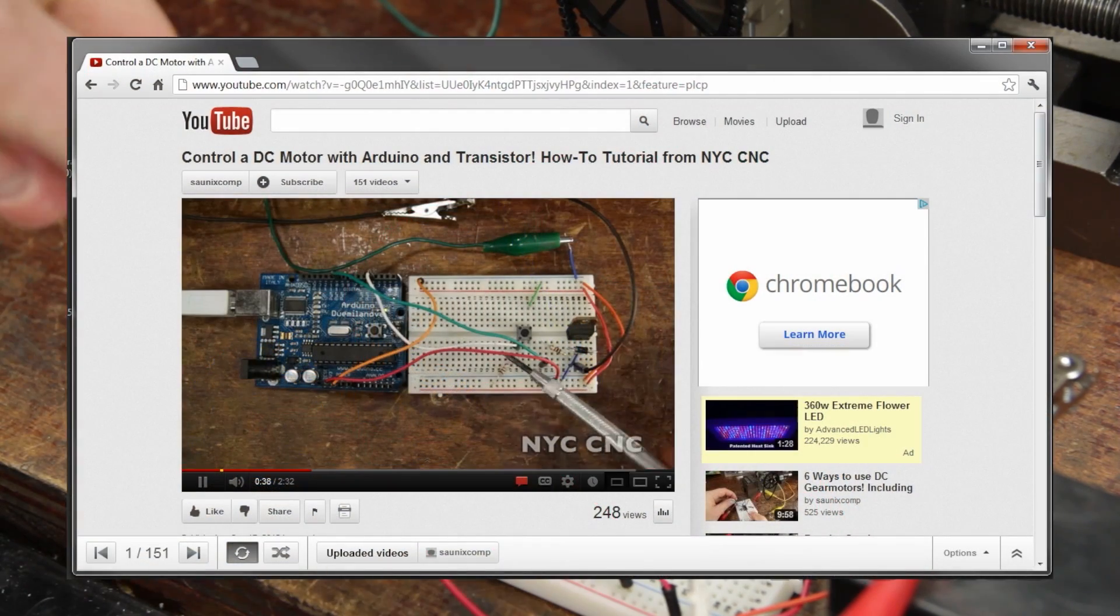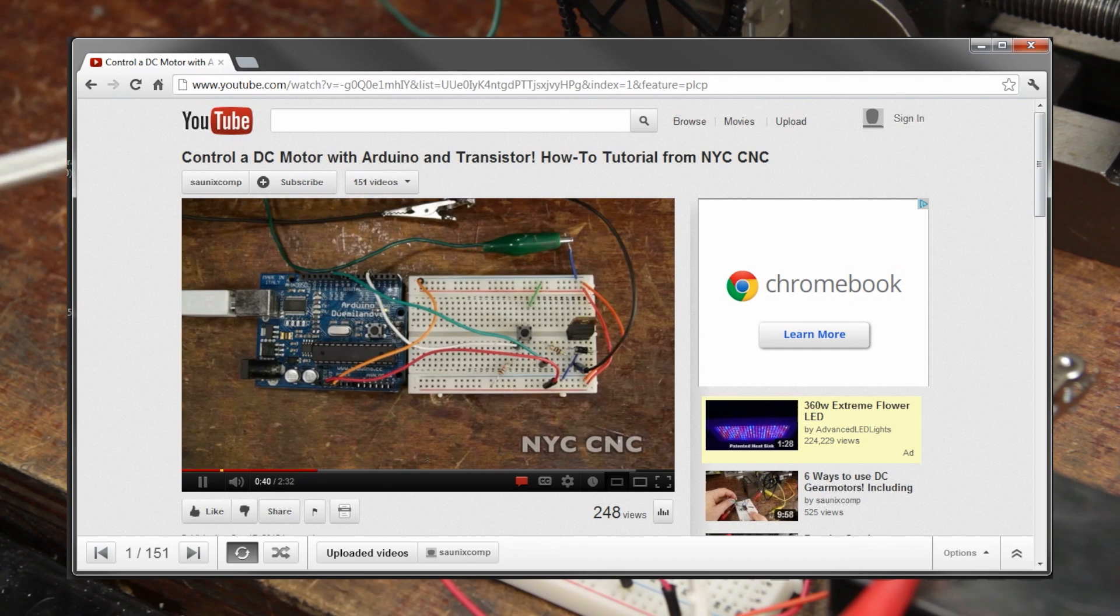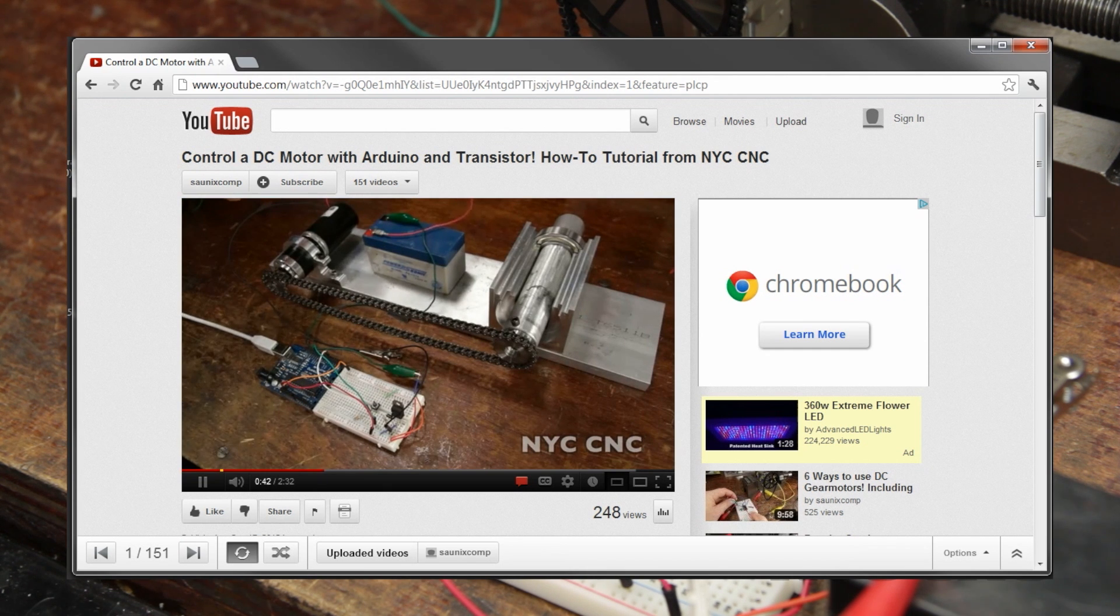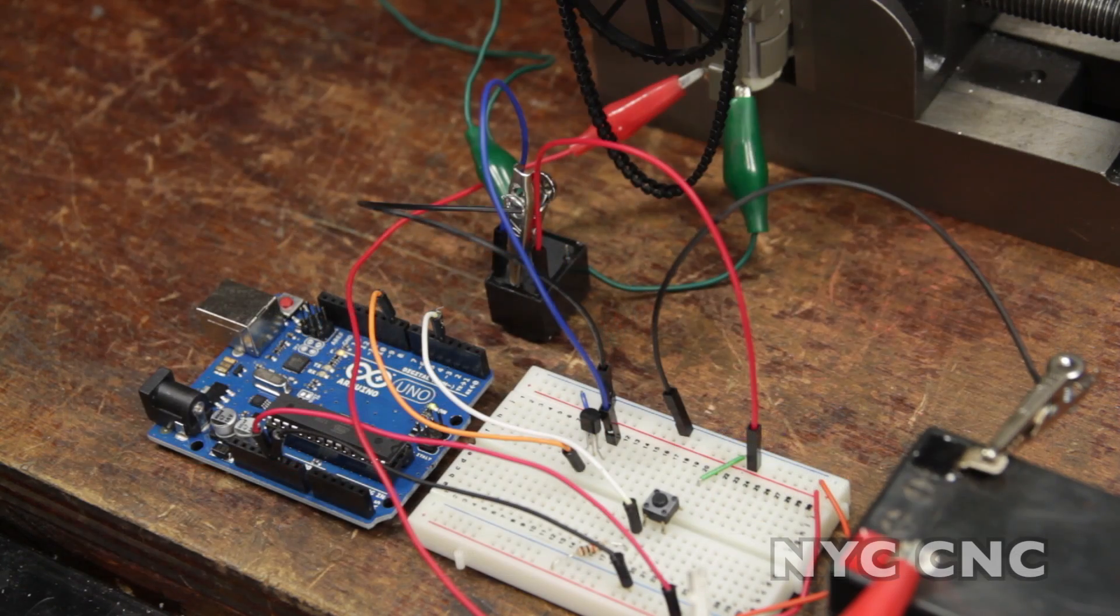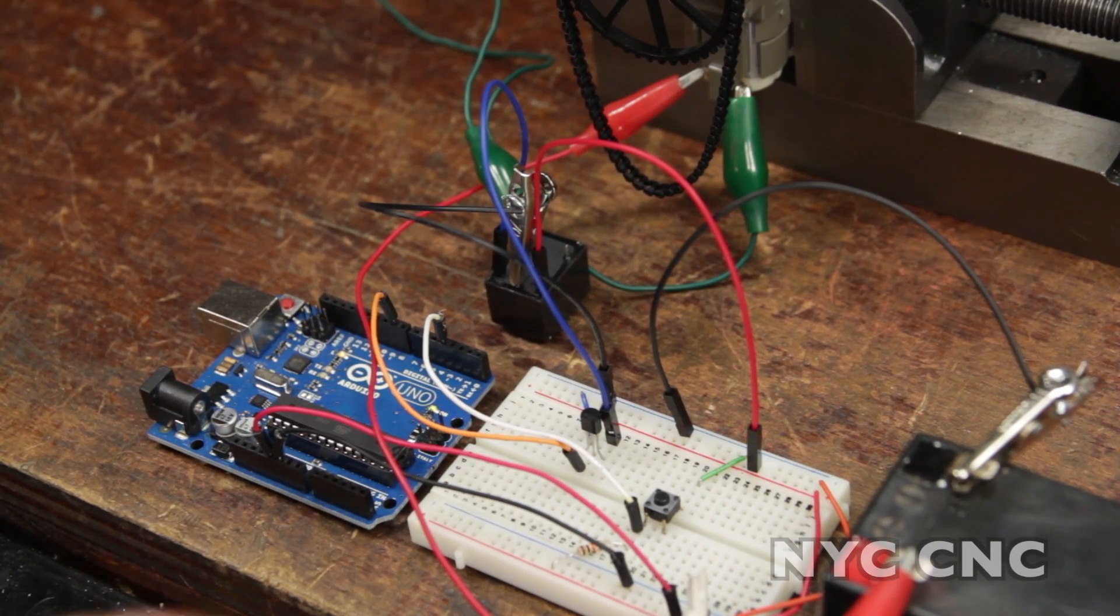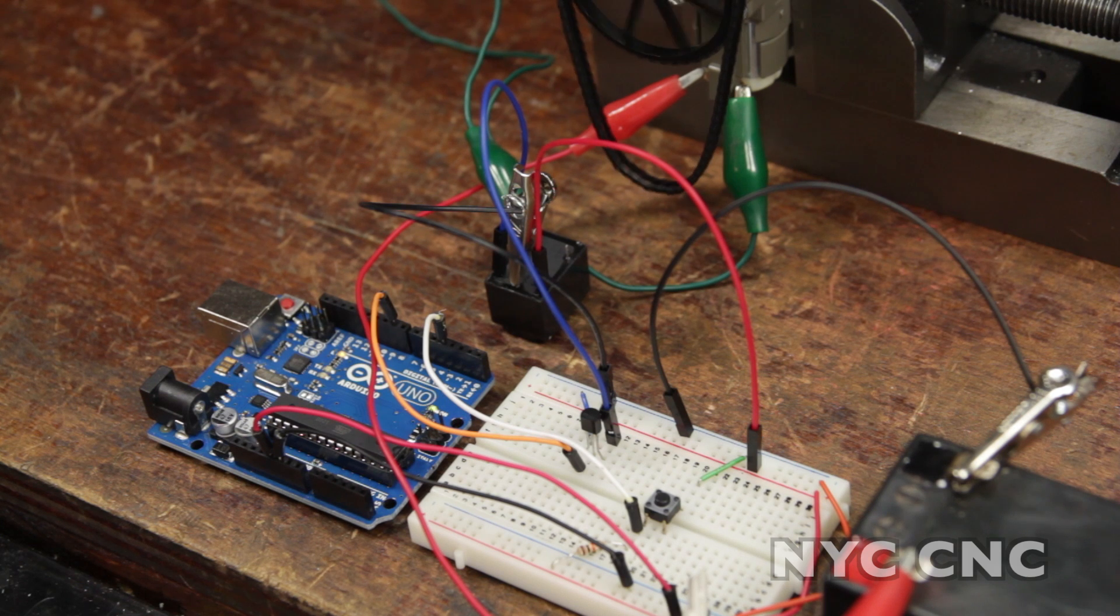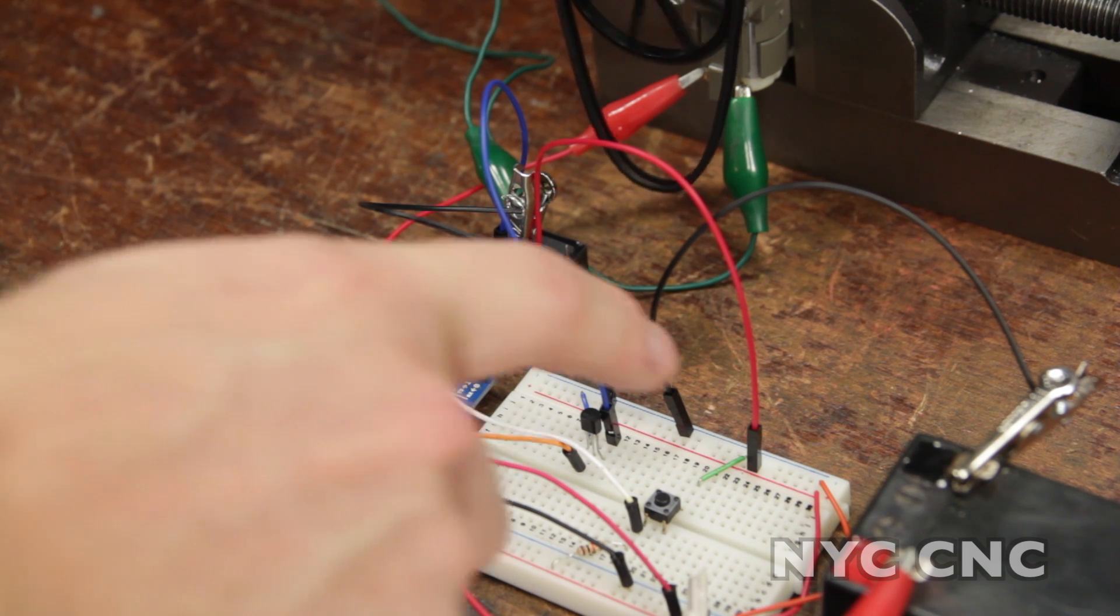For additional information on how the switch works and to look at the Arduino code, check out my video controlling a DC gear motor using an Arduino and a transistor. Push the button once, turns the relay on. Push it again, turns it off.